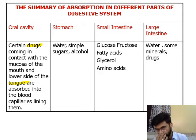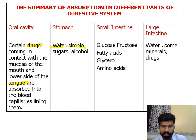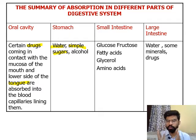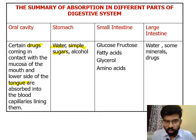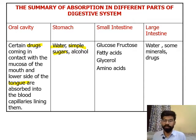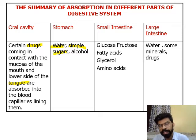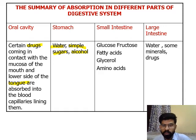In the stomach, some amount of water is absorbed. Simple sugars such as glucose get absorbed in the stomach, because digestion of carbohydrates starts in the buccal cavity with the help of salivary amylase, producing simple sugars that are absorbed in the stomach. Some amount of alcohol is also absorbed in the stomach if alcohol is ingested.